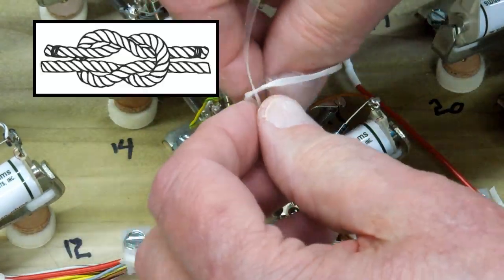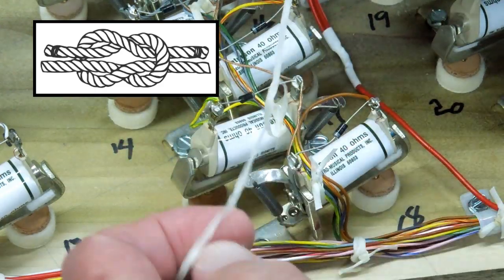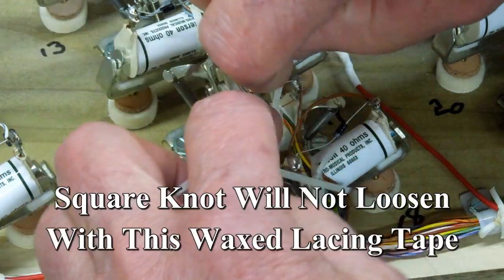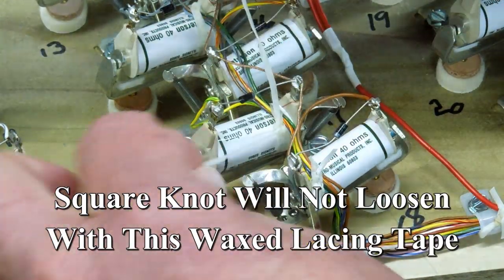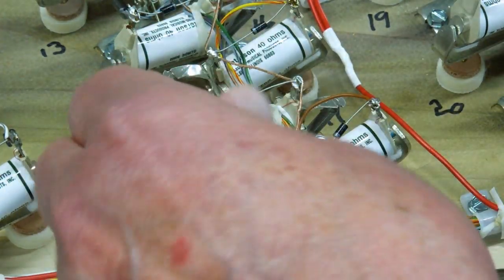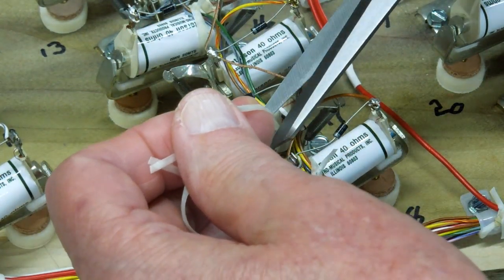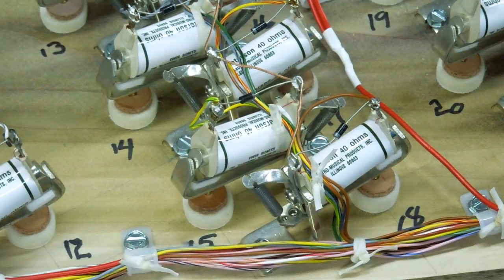Then you want to tie a square knot. If you don't know what a square knot is, Google it. A square knot will not come undone. Then I cut it off about a quarter of an inch long. That's it.